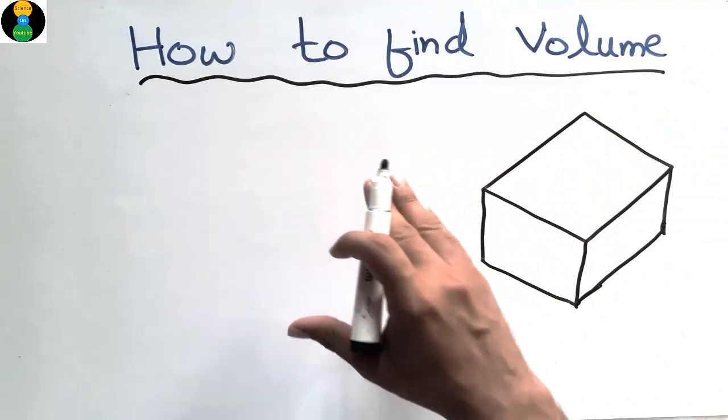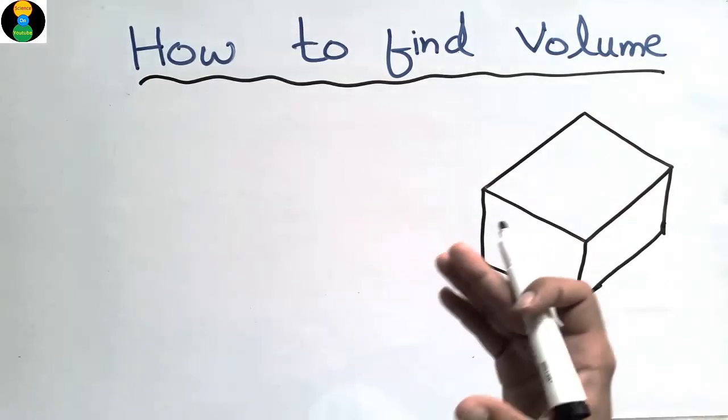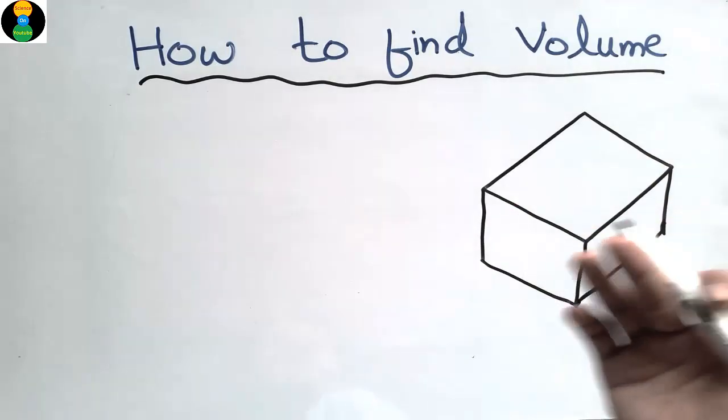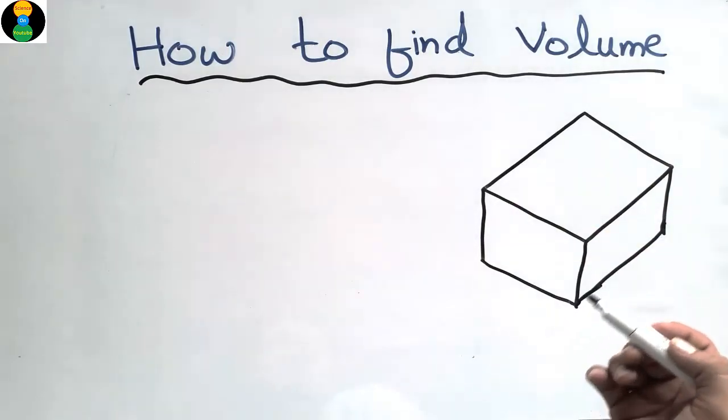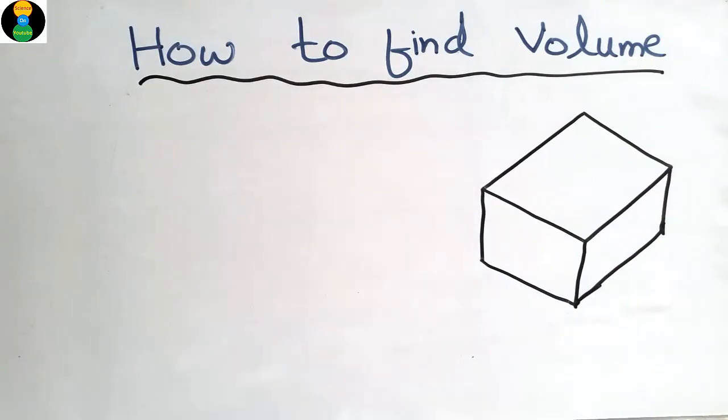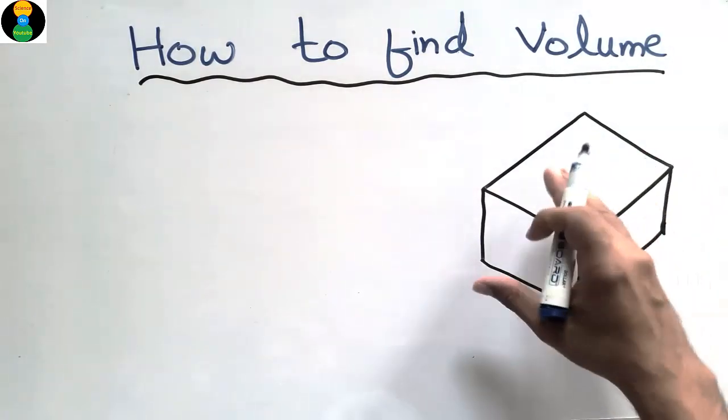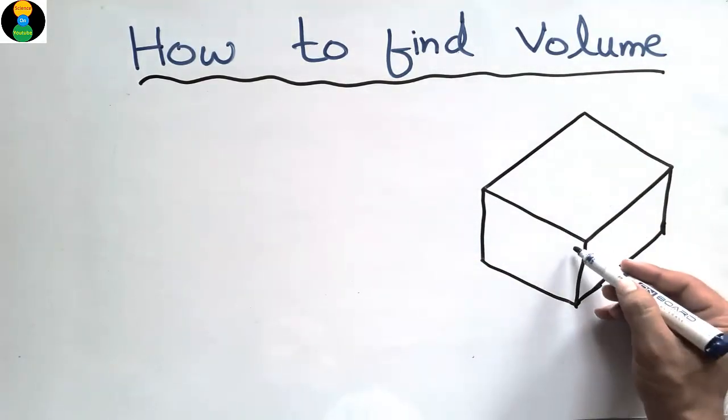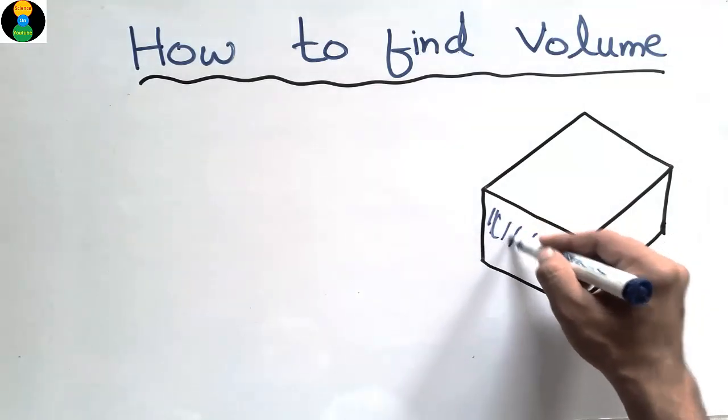In this lecture we are going to tell the method how to find the volume of any type of object. Let's consider this is any object given to us. It may be a wood object, it may be a metal object, and the dimensions are also known to us.